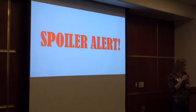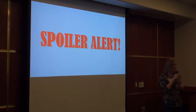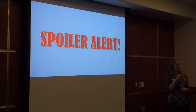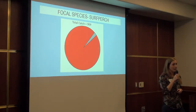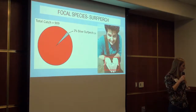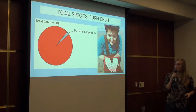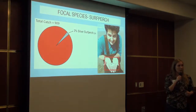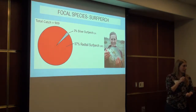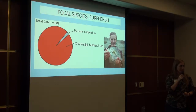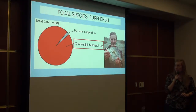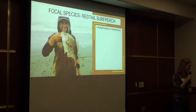As a spoiler to explain why we used red-tailed surf perch as our focal species: over the two years of our study, we caught 909 surf perch. Of those, 24 were silver surf perch and the remaining 885 were red-tailed surf perch. Given those results, we decided to focus on red-tailed surf perch as our focal species.